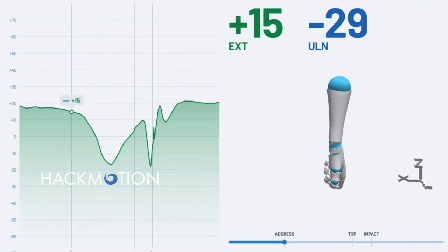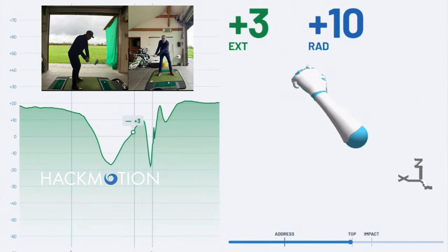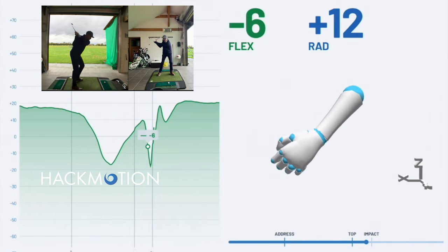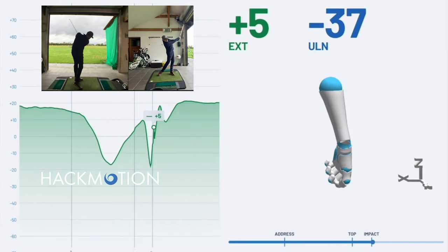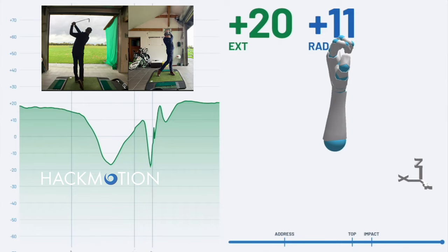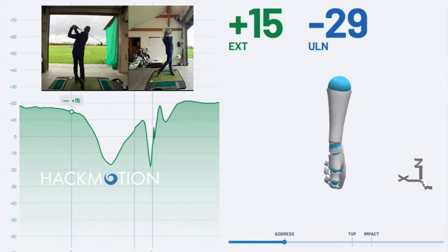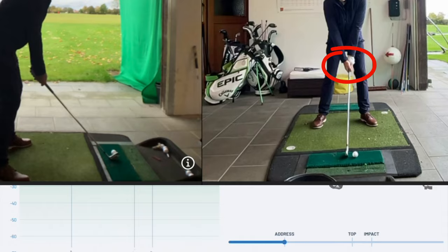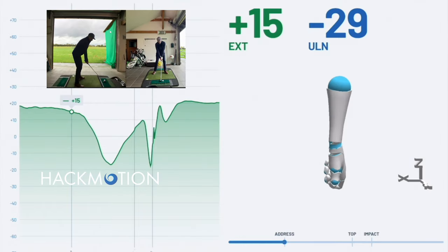And these three lines are just basically showing you the address position where the little circle is now moving through to the top of the swing and impact and then through into the follow-through. So if we start at the address position you can actually see there's a certain amount of extension in the lead wrist simply because of the way that we grip a golf club.